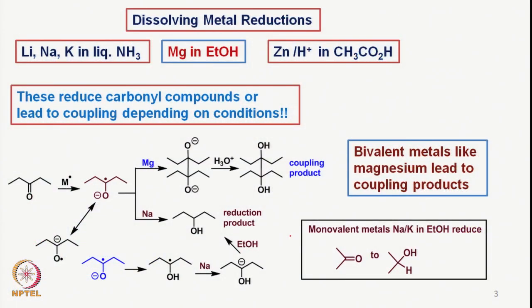Now we move on to dissolving metal reductions. In dissolving metal reductions, we have alkali metals, alkaline earth metals, and some transition metals. For example, lithium, sodium, and potassium in liquid ammonia can be used as a reducing system. We can also use magnesium in ethanol, or zinc and acetic acid — systems in which the metals dissolve and the reduction occurs.